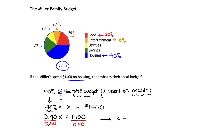When we throw that in our calculator, 1,400 divided by 0.4 gives us 3,500. And what is X representing? X is representing our total budget. So we would say that if the Millers spend $1,400 on housing, then their total original budget would have been $3,500.